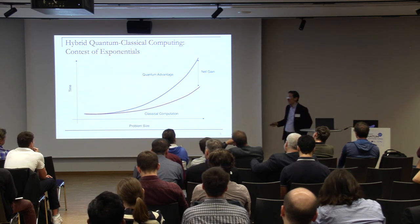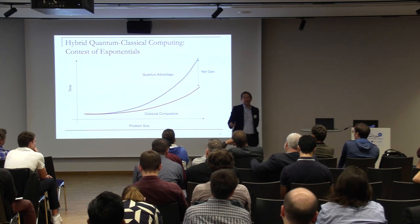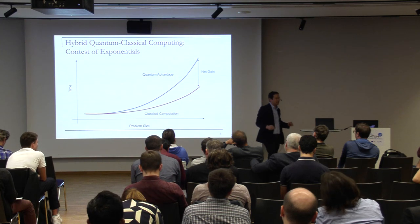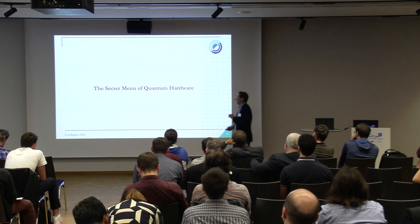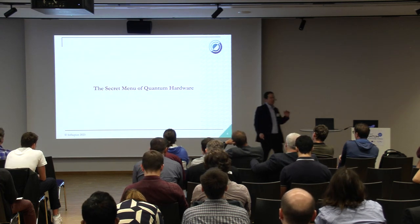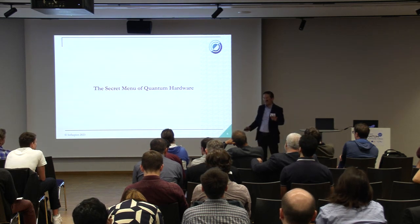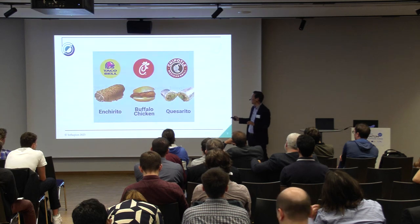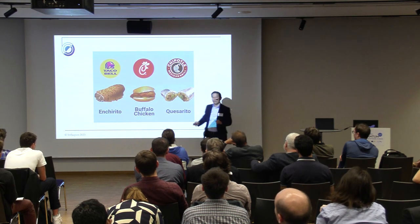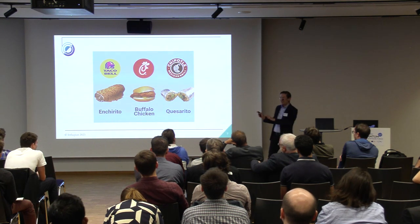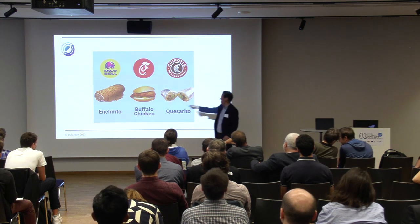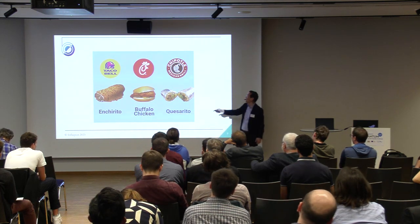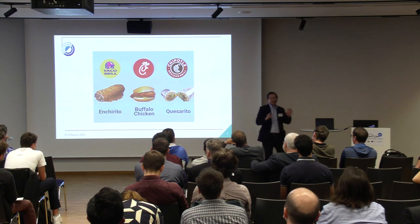Now I'll launch into a number of small examples of what you can do if you go beyond the traditional abstraction of a universal gate set. This is the part that might make you hungry. Typically from the software level we see a universal gate set and compile to that, but there's a 'secret menu' of quantum hardware — analogous to these fast-food restaurants where items aren't on the menu but you can order them. You can go to Taco Bell and order a combination of an enchilada and a burrito.